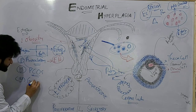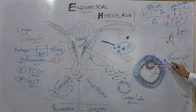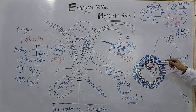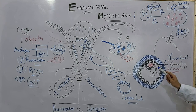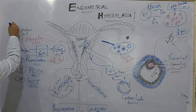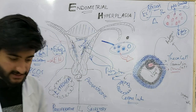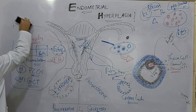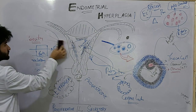The fourth risk factor is granulosa cell tumor. The theca cells secrete androgens which travel to the granulosa cells and are converted into estrogen. If there is a tumor of the granulosa cell, there will be excess estrogen production and hence endometrial hyperplasia. So to summarize the risk factors: obesity, anovulatory cycle, polycystic ovarian syndrome, and granulosa cell tumor.